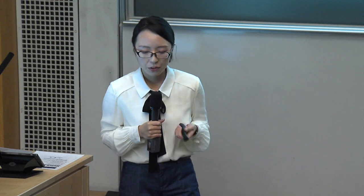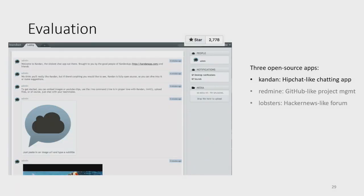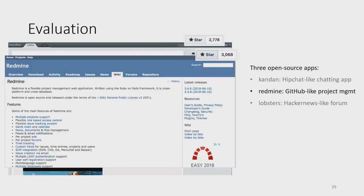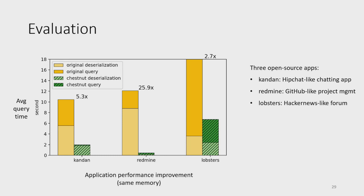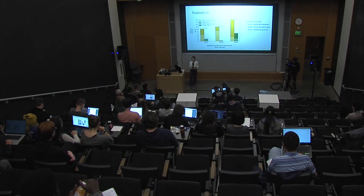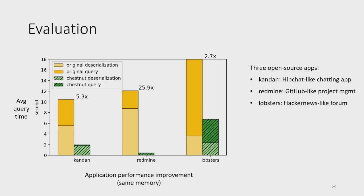We evaluated Chestnut on three open-source applications built with Ruby on Rails using MySQL: Candent, a HipChat-like chatting application; Redmine, a GitHub-like project management application; and Lobsters, a Hacker News-like forum application. The query time is composed of the time to retrieve data and the time to deserialize it into Ruby objects. Chestnut is able to speed up queries up to 26x, improving both query answering and deserialization. For all applications, it takes less than an hour to find the best storage.